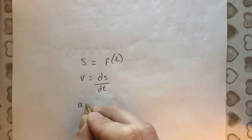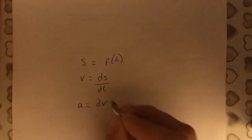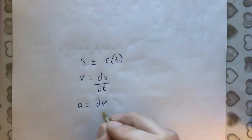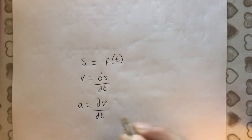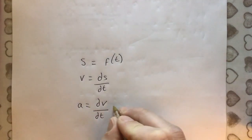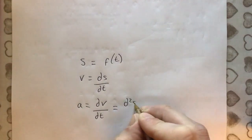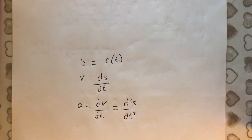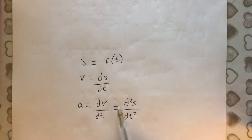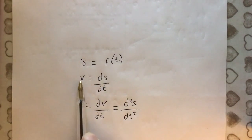And acceleration, because it's the rate of change of velocity, is going to be dV by dt. It's the rate of change of velocity. So if you differentiate velocity, you get acceleration. And of course that was the differential of the displacement. So this is the second differential, just like we did for the turning points. The second differential of the displacement is the acceleration. So you need to know that relationship that you can go from displacement to velocity by differentiating, and from velocity to acceleration by differentiating again.